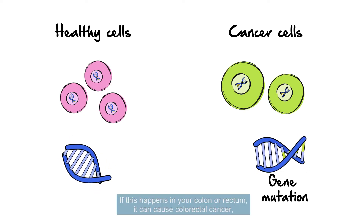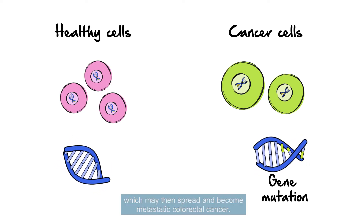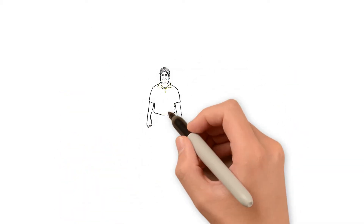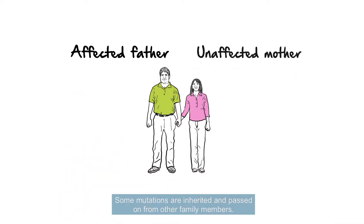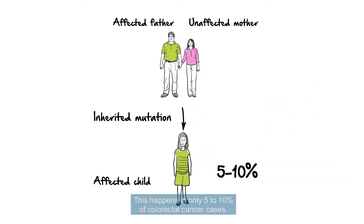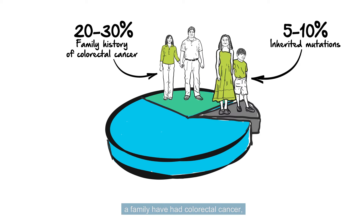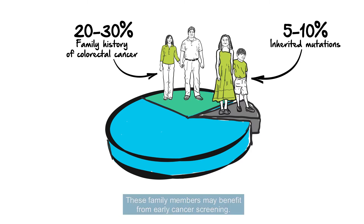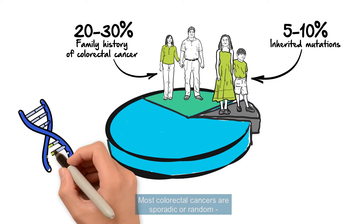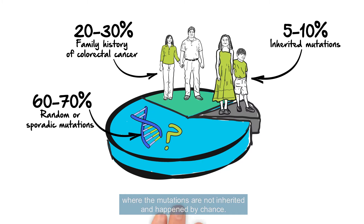If this happens in your colon or rectum, it can cause colorectal cancer, which may then spread and become metastatic colorectal cancer. Some mutations are inherited and passed on from other family members — this happens in only 5-10% of colorectal cancer cases. If there is a family history where several close relatives have had colorectal cancer, other relatives may be at increased risk. These family members may benefit from early cancer screening. Most colorectal cancers are sporadic or random, where the mutations are not inherited and happen by chance.